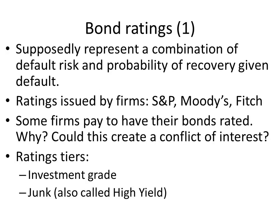Now we'll talk about bond ratings. They supposedly represent a combination of default risk and probability of recovery given default. Default risk is the risk that the borrower is going to default on the loan — the usual method is not paying as promised, but violation of the bond's covenants would also be a technical default. If the borrower does default, the process of getting money back is called recovery. The second thing bond ratings represent is the probability of recovery given default.